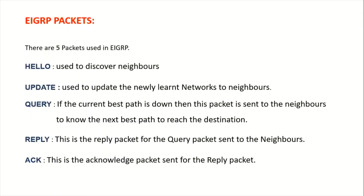There are five types of packets used in EIGRP. The hello packet is used to discover neighbors. The update packet is used to send newly learned networks to neighbors. The query packet is sent to neighbors to find the next best path when a current path goes down. The reply packet is sent in response to a query packet. The acknowledge packet is sent to acknowledge all other packets.